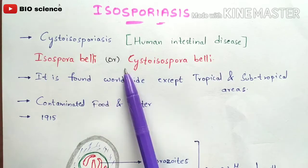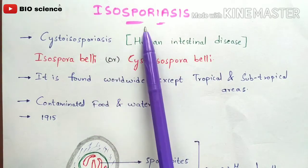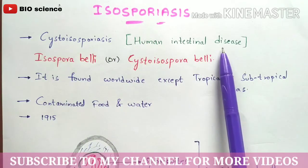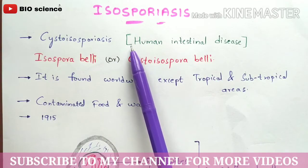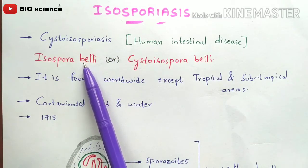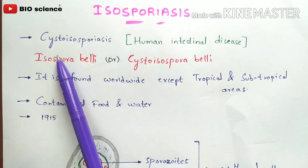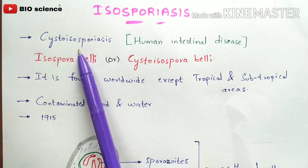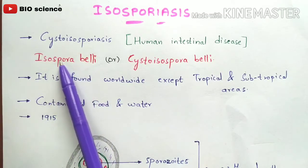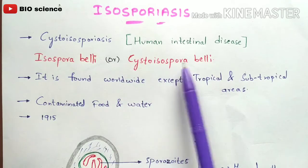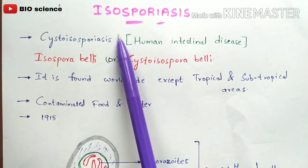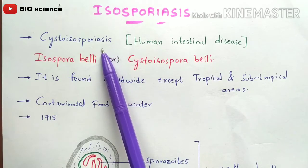So firstly let us discuss about the introduction of isosporiasis. The other name of isosporiasis is cysto-isosporiasis, and it is a human intestinal disease — the disease occurs in the epithelial cells of the human intestine. This cysto-isosporiasis is caused by a protozoan parasite called Isospora belli. The other name of Isospora belli is Cysto-isospora belli — both names refer to the same organism, and isosporiasis and cysto-isosporiasis are also the same.